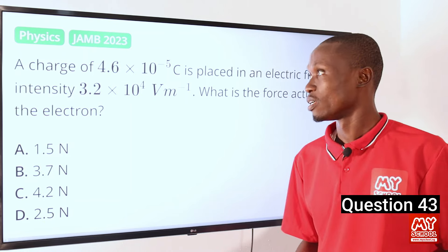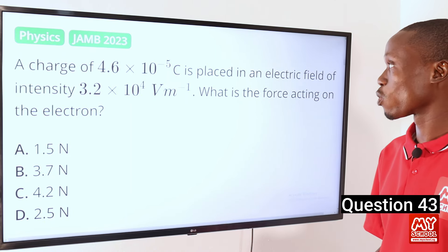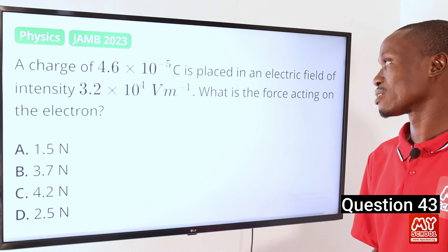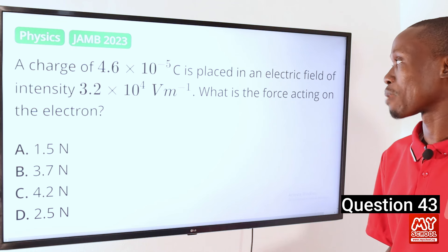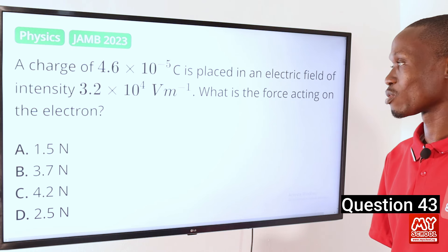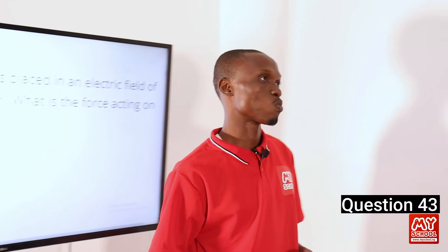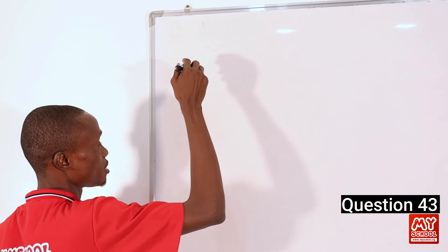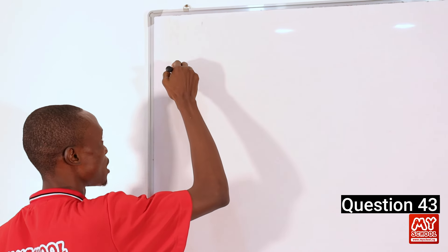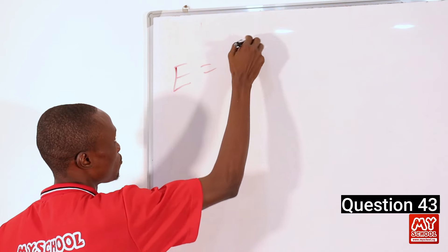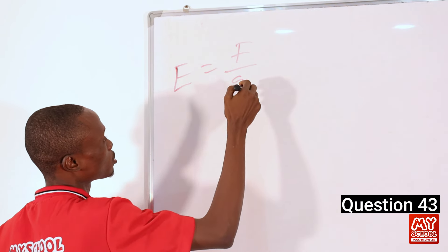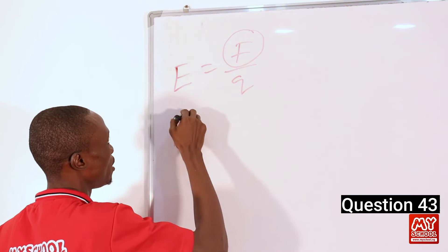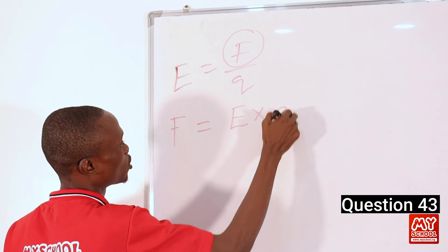Question 43. A charge of 4.6 × 10⁻⁵ coulombs is placed in an electric field of intensity 3.2 × 10⁴ volts per meter. What is the force acting on the charge? You must not forget that electric field intensity is related to force and charge by the equation E equals F over Q. In this question we are looking for F, so we make F the subject: F equals E times Q.